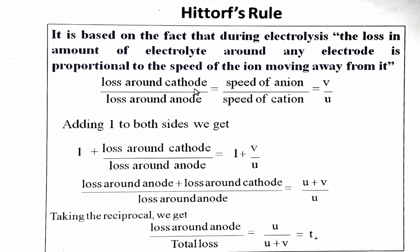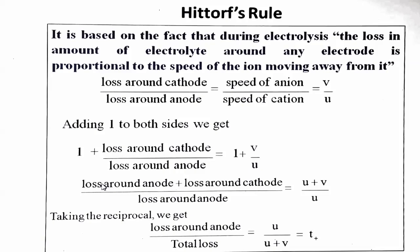Loss around the cathode equals the speed of the anion, V. Loss around the anode equals the speed of the cation, U. The ratio is V upon U. Adding 1 to both sides gives us: loss around anode upon loss around cathode equals U plus V upon U. Taking the reciprocal, we get that loss around anode upon total loss equals T-plus, the transference number of cations. Conversely, loss around cathode upon total loss gives the transference number of the anion, T-minus.